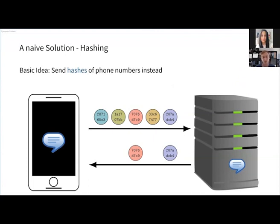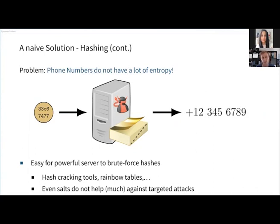This seems like a good solution since if we use good cryptographic hash functions, these should have properties like pre-image resistance, so the server cannot really get the phone numbers back of contacts he doesn't already know. However, there's a practical problem in that phone numbers don't actually have a lot of entropy. In the US there are fewer than a billion valid phone numbers, so powerful servers can easily brute force all possible phone numbers to find the one that produced a given hash, using off-the-shelf tools for hash cracking or even building rainbow tables. Even adding a salt doesn't help much against targeted attacks.